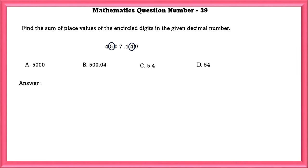Mathematics question number 39. Find the sum of place values of encircled digits in the given decimal number. Sum of place values of 5 and 4 is equal to 500 plus 0.04 which is equal to 500.04.